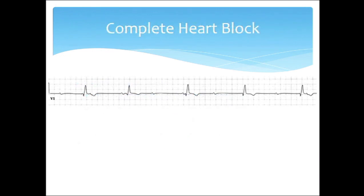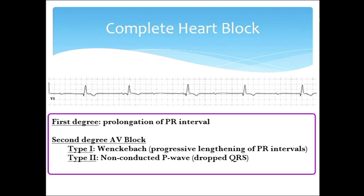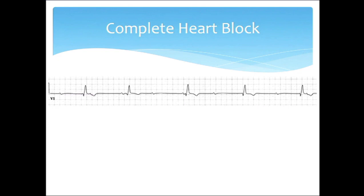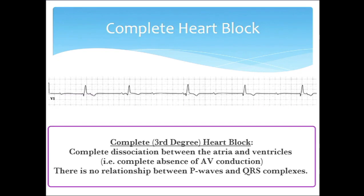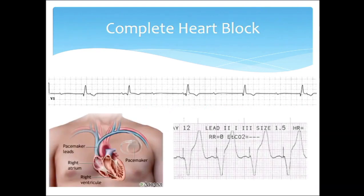Here is one example of complete heart block. This is the bradyarrhythmia they're most likely to show you. Heart blocks come in different varieties — first degree, second degree, and so on — but all you really need to know is that complete heart block is a scenario where there is no reliable communication between the atria, those P waves, and the QRS complex. Lyme disease absolutely can give you complete heart block in a younger person. In an older person, it's almost always that the patient is vectoring towards a pacemaker.